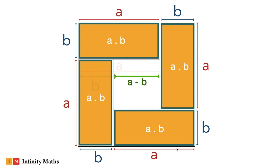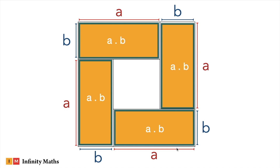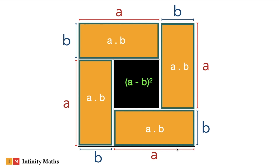Since opposite sides are equal, you can say that it is a square of side (a minus b), so the area represented by this small square would be nothing but (a minus b) whole square. So you can say that the complete area of this side (a + b), which is (a + b) whole square, can also be said to be equivalent to 4 times ab plus (a minus b) whole square.